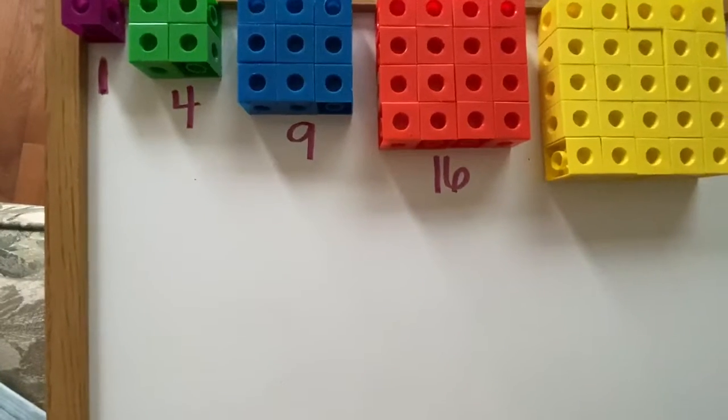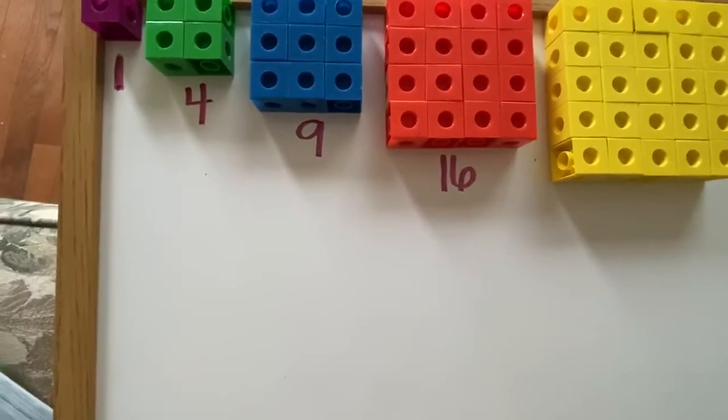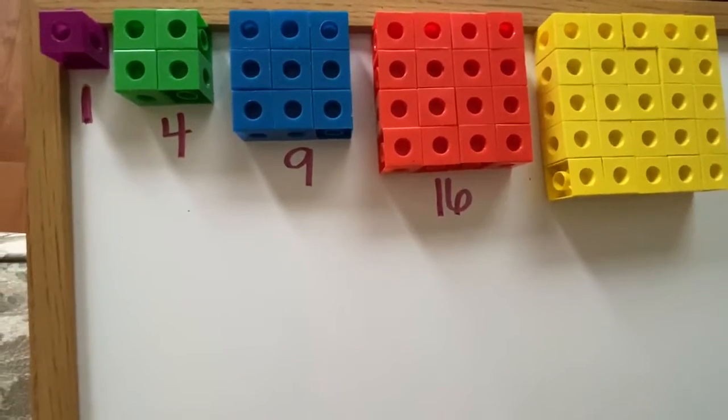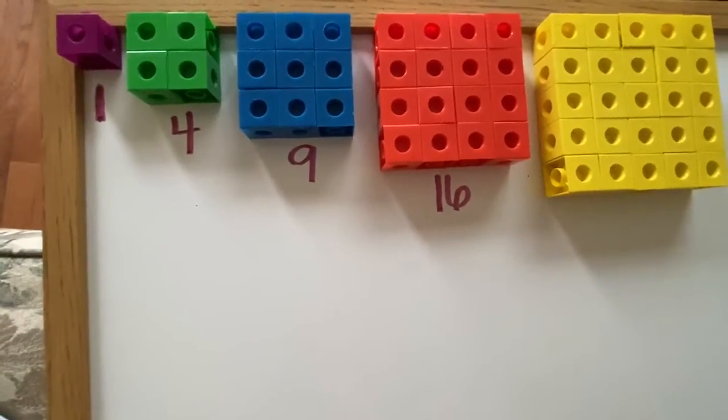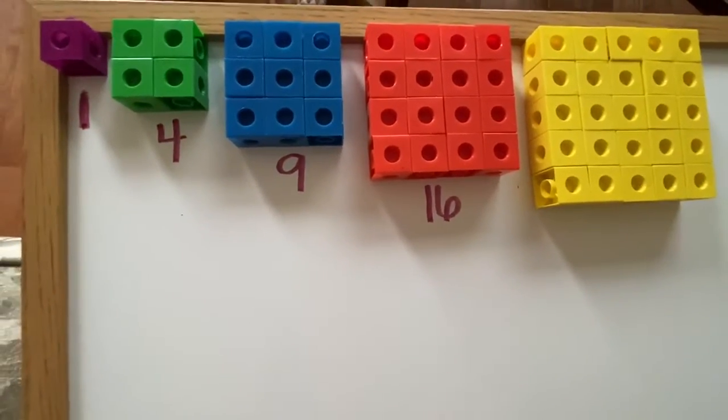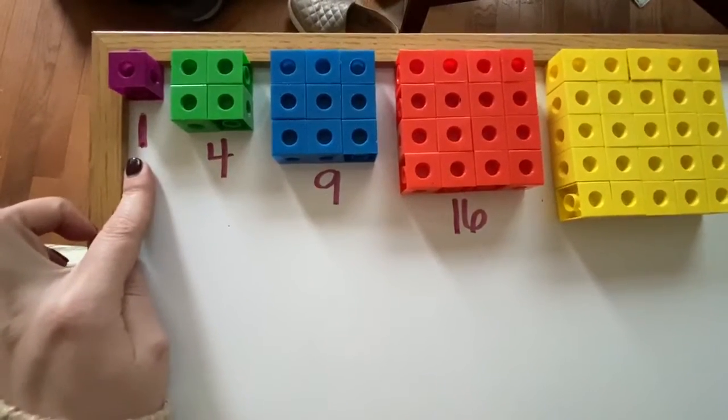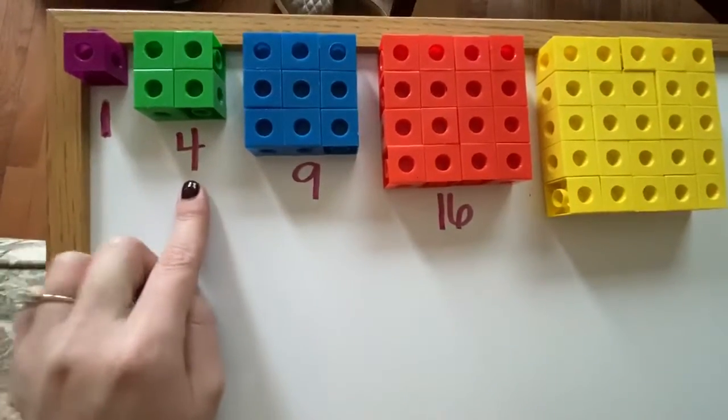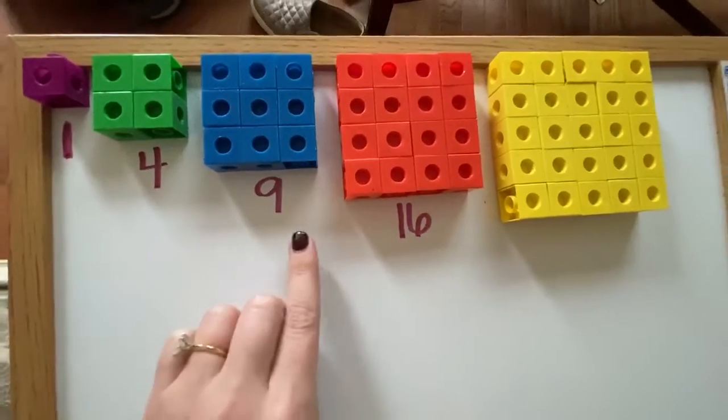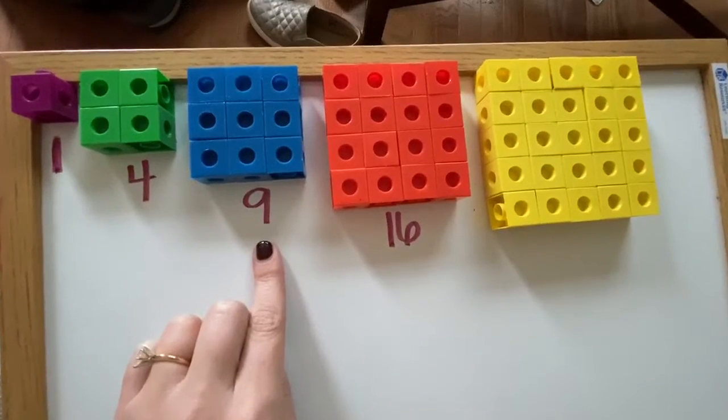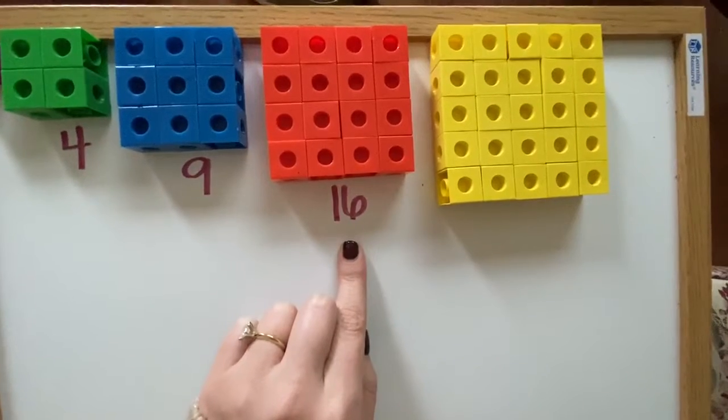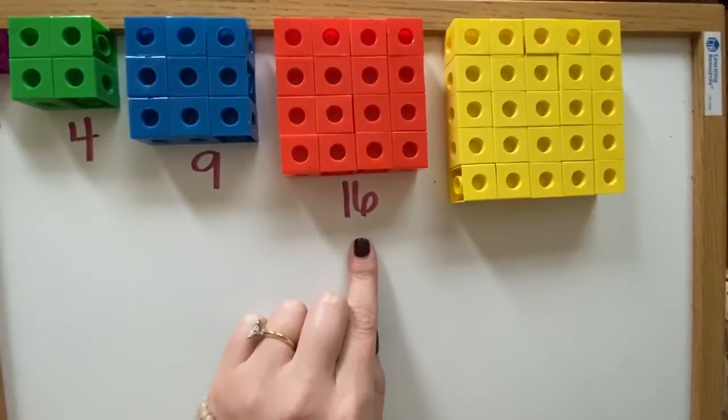So a quick refresh. Square numbers are the product of two identical factors. So we will start with the identical factor 1. 1 times 1 equals 1. 2 times 2 equals 4. 3 times 3 equals 9. 4 times 4 equals 16.